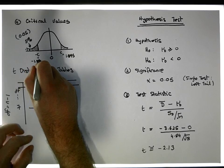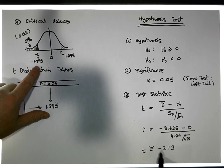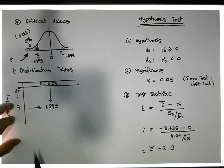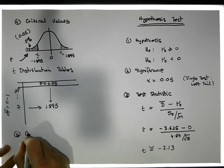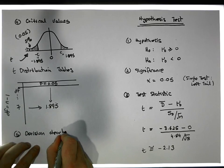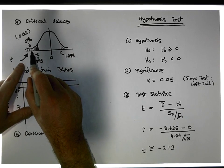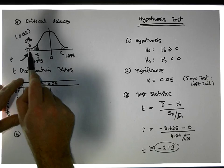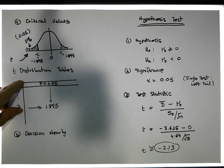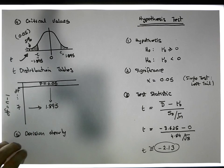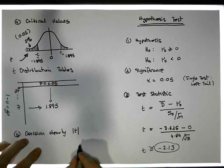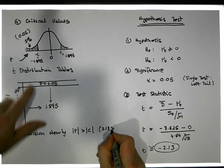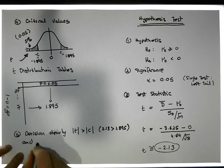Through symmetry, the critical value on the left must be equal to minus 1.895. Our test statistic is minus 2.13, which falls in the left-hand tail — clearly in the rejection region. The absolute value of our test statistic (2.13) is bigger than the absolute value of our critical value (1.895), so we reject.